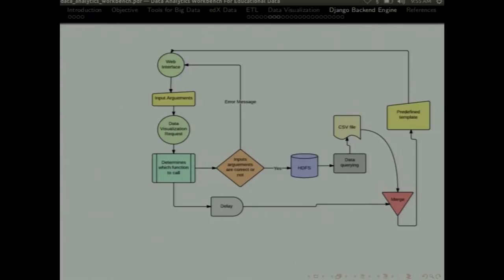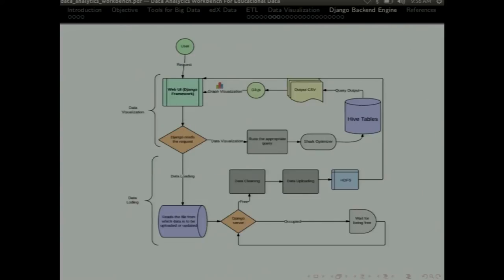We have data visualization part. On getting the input arguments, first of all, Django will check whether the arguments are correct or not. And after that, it will see which query is to be run for now. When it decides that the input we have got is correct and the function that we have to call to generate the graph, two processes simultaneously run. First one is querying. It queries from the database. It generates the CSV file and the other part which generates a template. And it combines both of these parts, like CSV file and the template part to give the final output. Next one is the overall processing. That is, first of all, it decides whether it is data visualization or data loading and then completes it all.